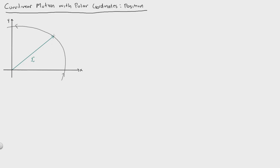At this given point, we can define the particle's position relative to some angle theta, defined from the positive x-axis. I want to write this r vector in terms of unit vectors. I'm going to define a unit vector and call it er.